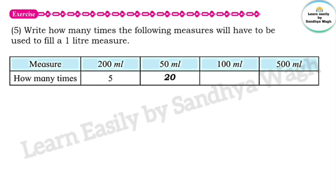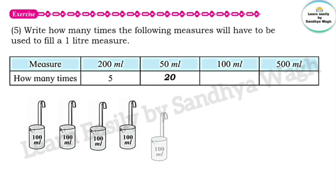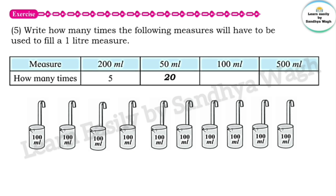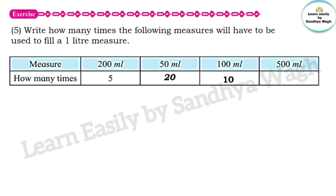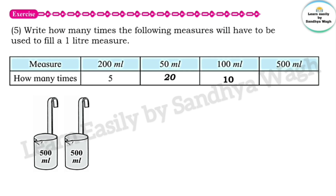For the 100 ml measure: 10 measures of 100 ml gives 1000 ml, which is 1 litre. So the 100 ml measure is needed 10 times. For the 500 ml measure: 500 ml plus 500 ml equals 1000 ml, which is 1 litre. So the 500 ml measure is needed 2 times.